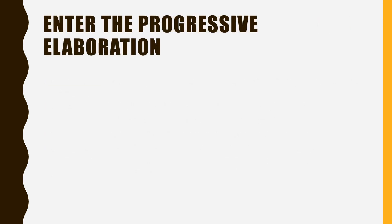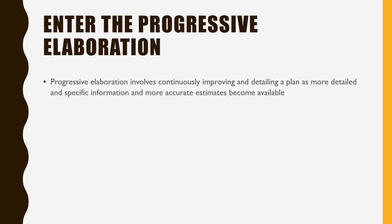On that question comes in a concept known as progressive elaboration. The bookish definition: progressive elaboration involves continuously improving and detailing a plan as more detailed and specific information and more accurate estimates become available. As a project manager, you should plan every single detail possible — but the concept of progressive elaboration tells you that you should improve and detail your plan as and when you get more detailed, specific, and accurate information.